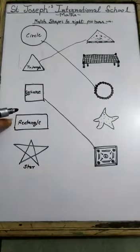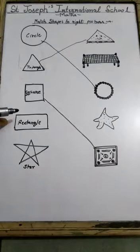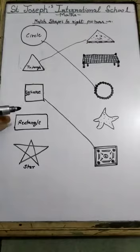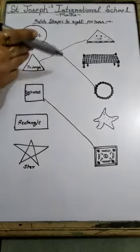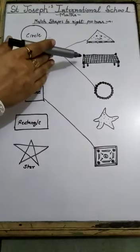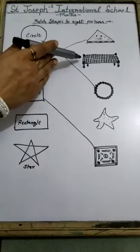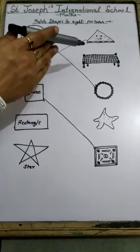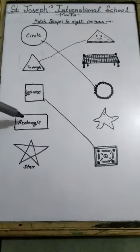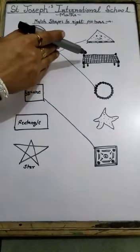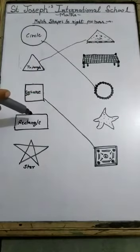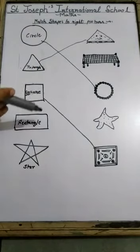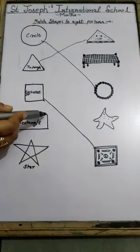And next, which is this shape? Rectangle. So this is rectangle. Now see, which picture has rectangle shape? See this — this is cot. And match cot to the rectangle shape. Yes, cot has rectangle shape. So match rectangle shape to the cot.